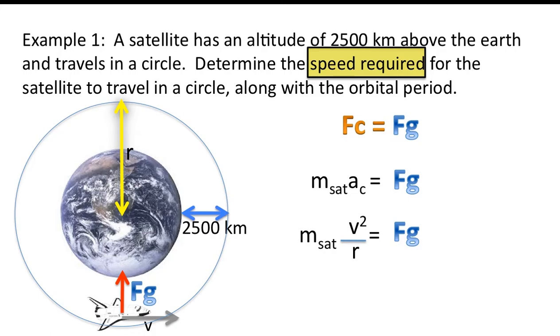Substituting, we get mass of the satellite times the speed squared of the satellite divided by the radius of the circle equals the force of gravity.